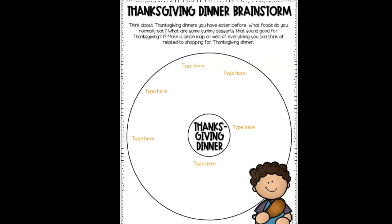First, let's do some brainstorming. Think about Thanksgiving dinners you have eaten before. What foods do you normally eat? What are some yummy desserts that sound good for Thanksgiving? Make a circle map or web of everything you can think of related to shopping for Thanksgiving dinner. You're just going to click in the circle and you can type in here. If you need to add more boxes, you can insert a text box. I'll show you how to do that at the end.